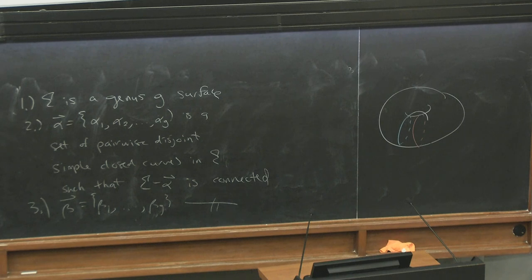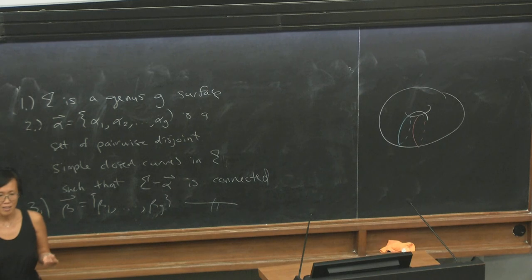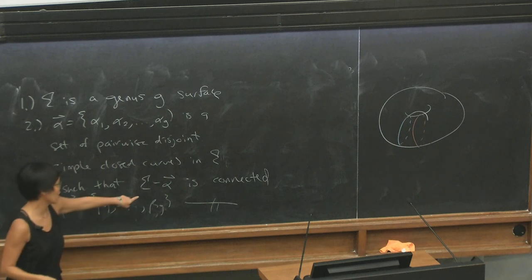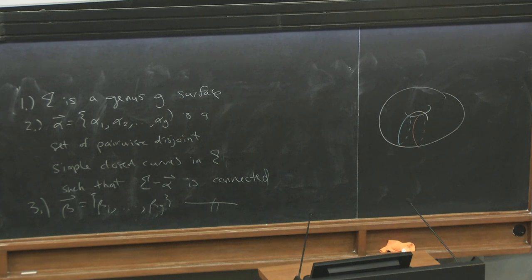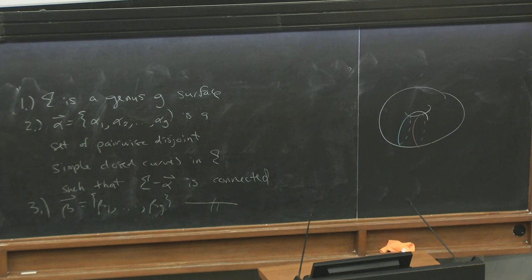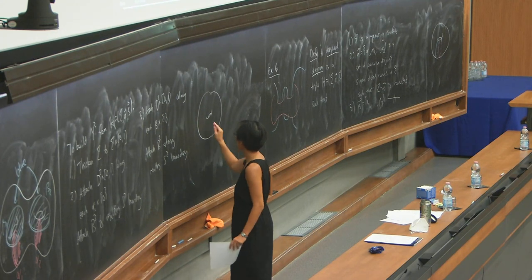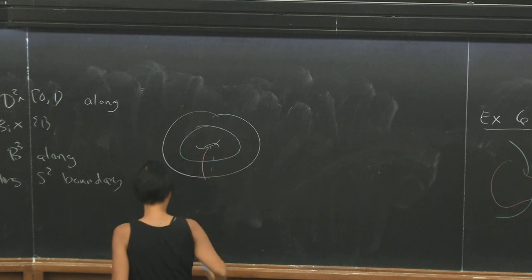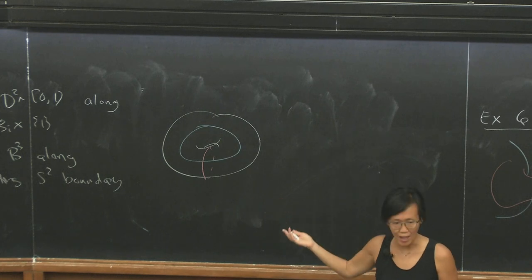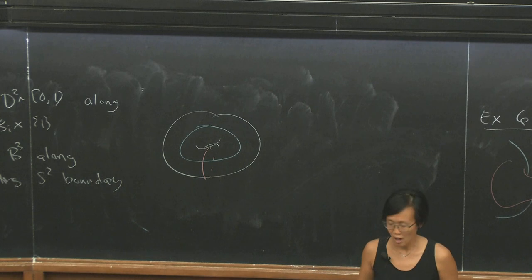The S² boundary follows from the condition that the complement of the alphas is connected — you can check this via an Euler characteristic argument. We can see by example that more than one Heegaard diagram can describe the same three-manifold: the genus-one and genus-two diagrams for S³ are both valid. However, any two Heegaard diagrams for the same three-manifold are related by a sequence of moves.